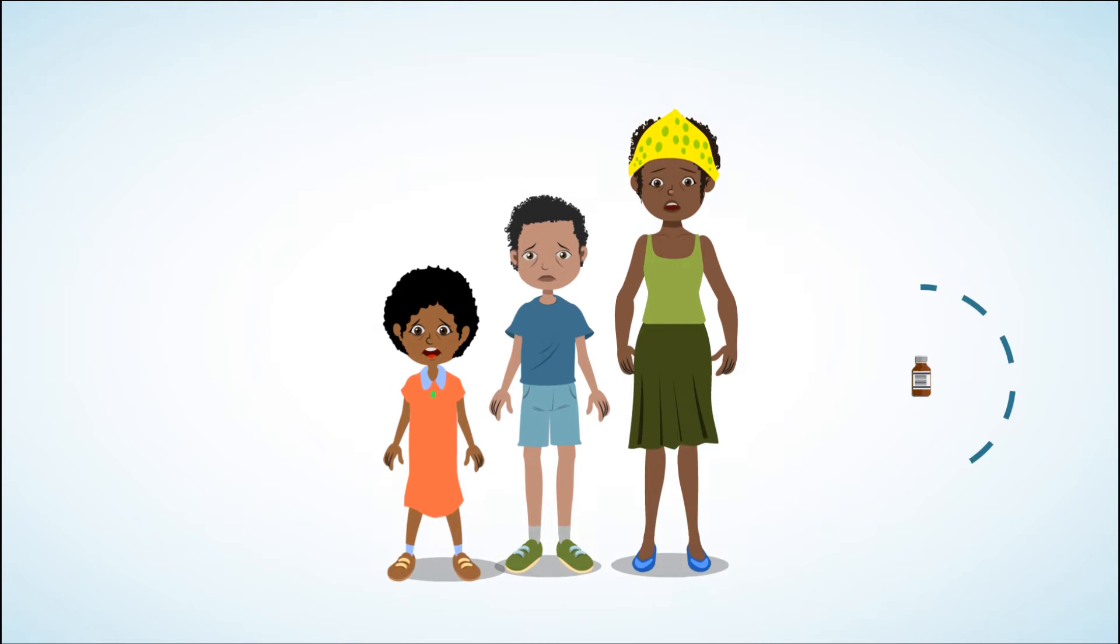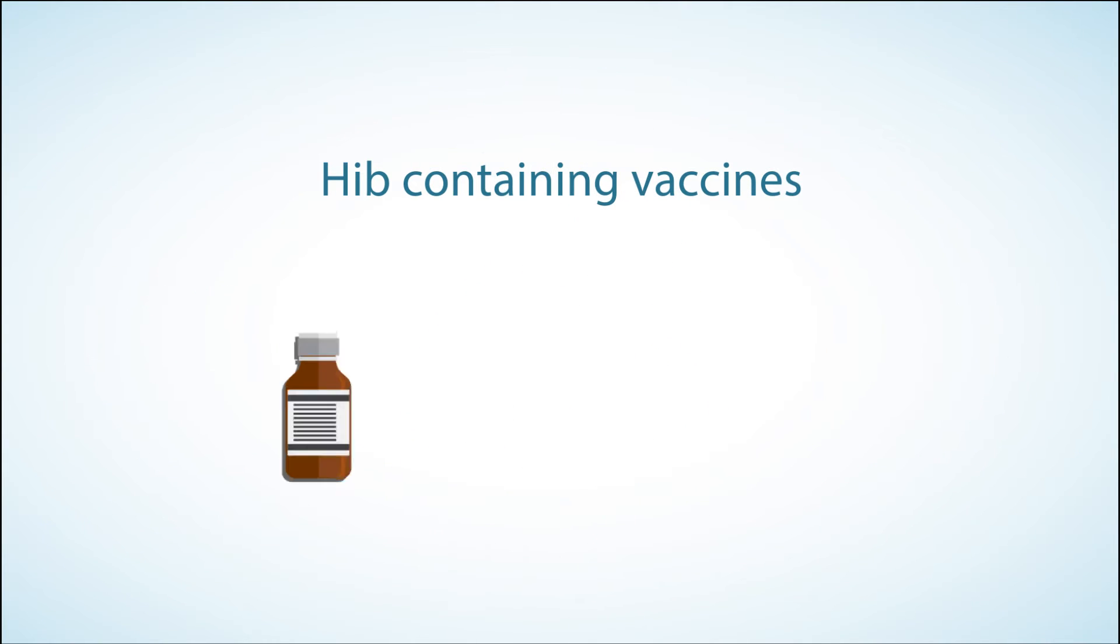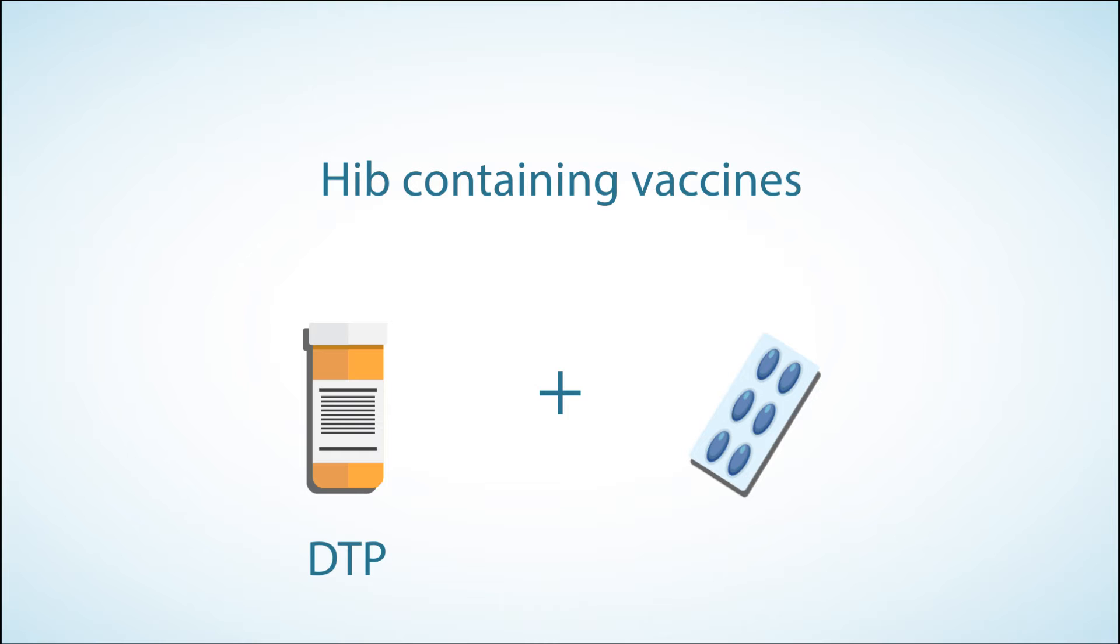Vaccine Summary: The most effective way to prevent Hib is to maintain a high level of immunization in the community. Hib containing vaccines are available in stand-alone and combination forms. In Ethiopia, Hib vaccine is given in combination form with DTP, Hepatitis B, and Hib in the form of pentavalent vaccine.